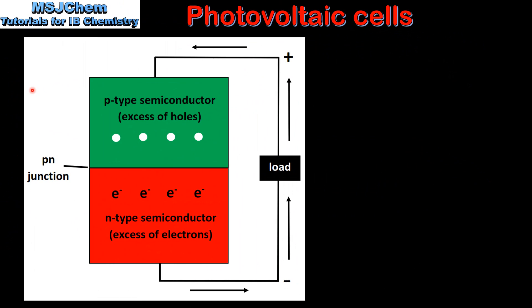Next we look at the operation of a photovoltaic cell. Here we have a diagram showing an n-type semiconductor and a p-type semiconductor. The two types are brought close together forming a p-n junction. In the n-type semiconductor there is an excess of electrons; in the p-type semiconductor there is an excess of holes.